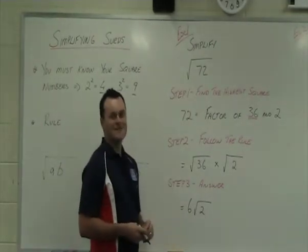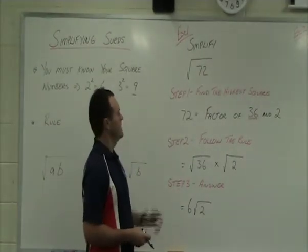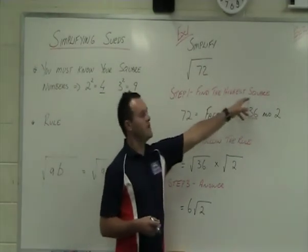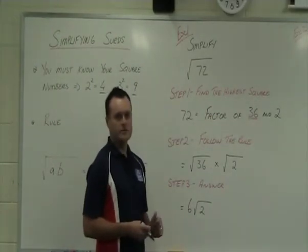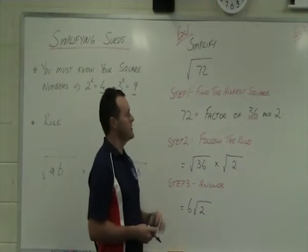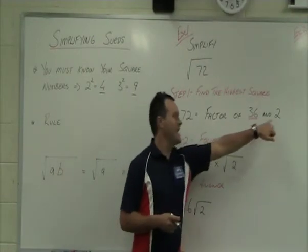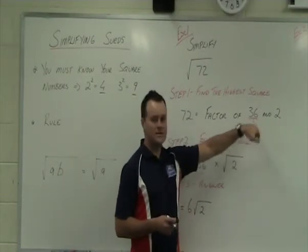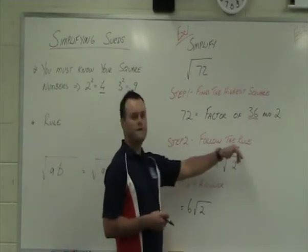Example number one is let's simplify root 72. Okay, so step one is to find the highest square number that will go into 72. So if you've got them all written down on your page, which one is the highest one that will go into it? Okay, now 72 has the factors of 36 and 2, and 36 is a square number.